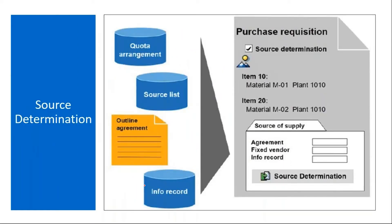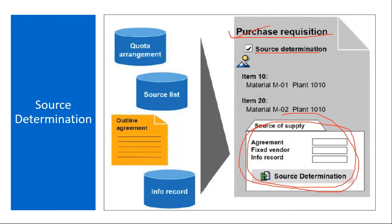Basically, whenever you create a purchase requisition, you can do the source determination process. That means in the purchase requisition itself, you can assign a supplier, then assign a vendor using the source determination process. When you do this source determination, the system will try to select the source either from quota arrangement or from source list, outline agreement, or info record.